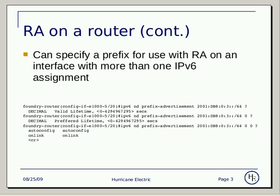As the example on this slide shows, in the interface config you do IPv6 ND prefix advertisement, specify the /64 you wish to announce, and then you set the valid lifetime and preferred lifetime.